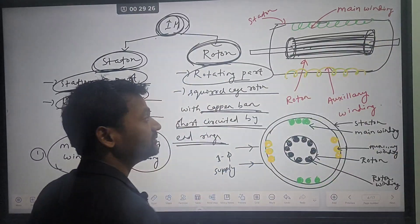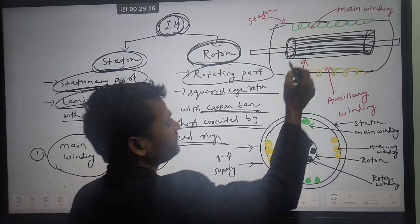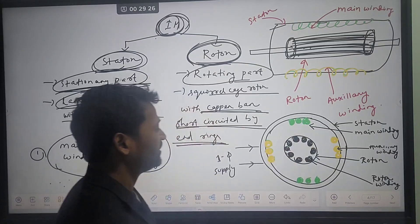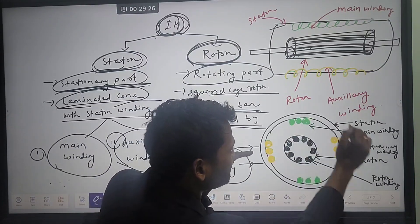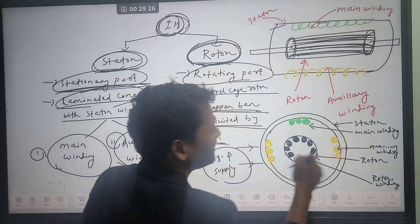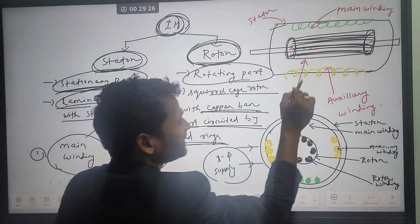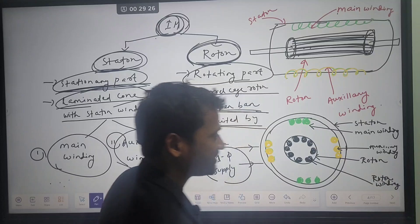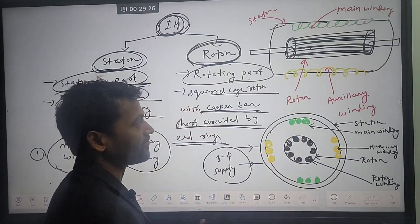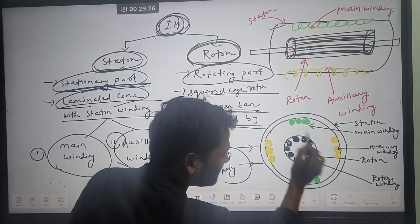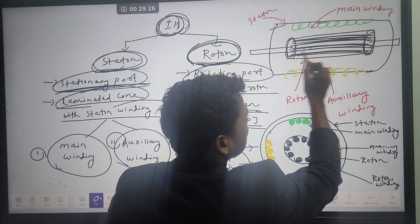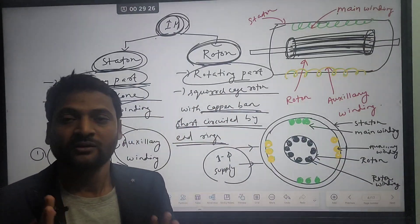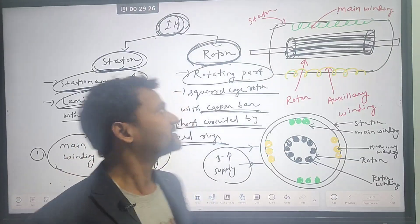Looking at the cross-sectional view of the motor: here, single-phase supply is given to the stator, which is the outer part. The stator has two windings — the green color shows the main winding and yellow shows the auxiliary winding. This is the cross-sectional view. The inner side is called the rotor, which has rotor bars or rotor conductors.